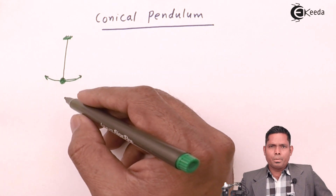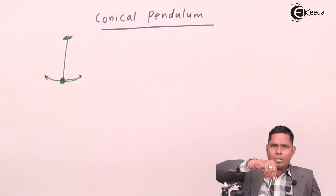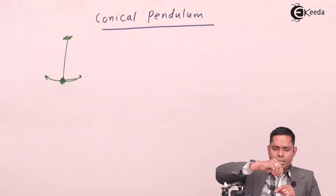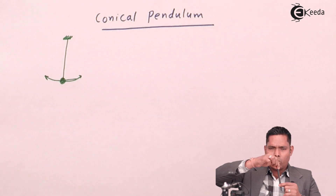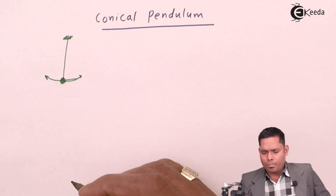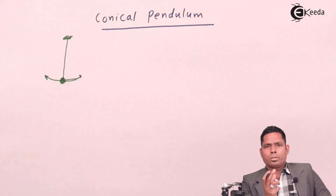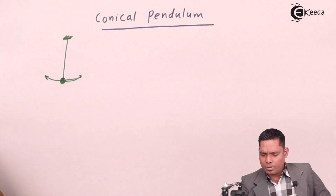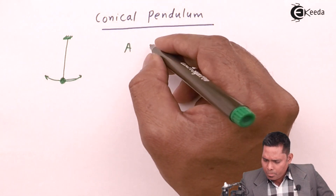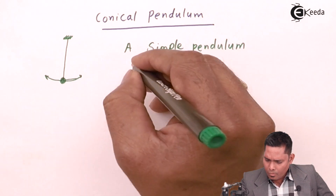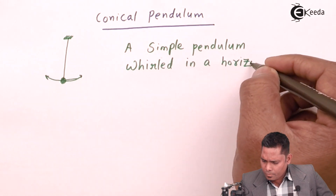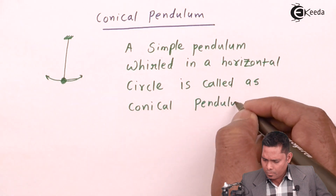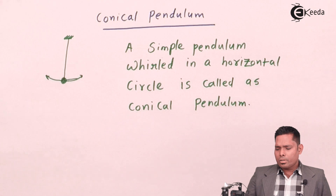What is a conical pendulum? When a simple pendulum is made to rotate in a horizontal circle, it creates a cone above the point of suspension. This is therefore called a conical pendulum, because the circular motion of the bob projects a cone at the point of suspension.